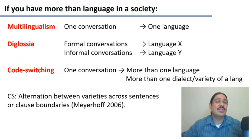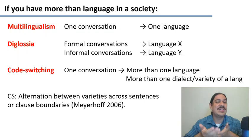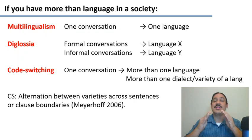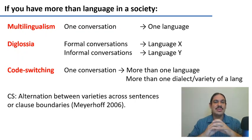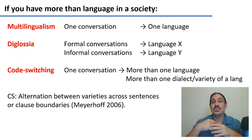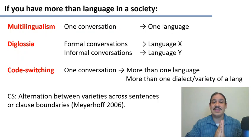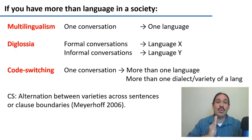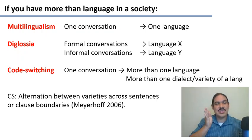In the last video, we looked at multilingualism and diglossia, and by the way, we never actually defined multilingualism. Multilingualism is a situation where you are in a society and there is more than one language, but you usually have one conversation carried out in a single language. So if you go to Canada, for example, and you live in an English-speaking part of the country, you'll find that most conversations are just all English all the way. If you're in Quebec, you're going to find that most conversations are all French all the way.